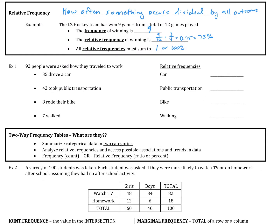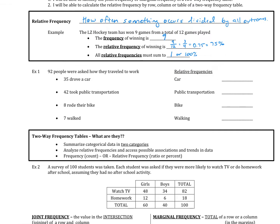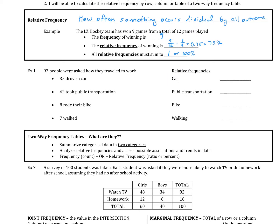So let's go ahead and practice. Example one: 92 people were asked how they travel to work — 35 drove a car, 42 took public transportation, 8 rode their bike, and 7 walked. Pause the video and fill out the relative frequencies for each. The relative frequency of car is 35 over 92, which is approximately 0.38, or 38%. For public transportation, we do 42 over 92, which is approximately 0.46, or 46%.